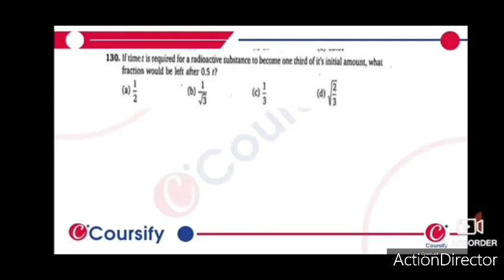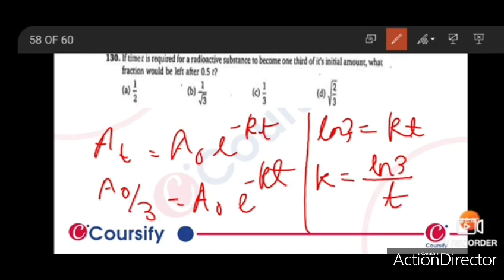If time t is required for a radioactive substance to become one-third of its initial amount, what fraction would be left after 0.5t? Here we have one-third of its initial amount.